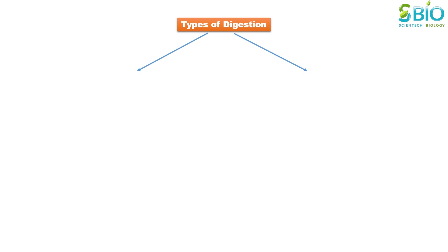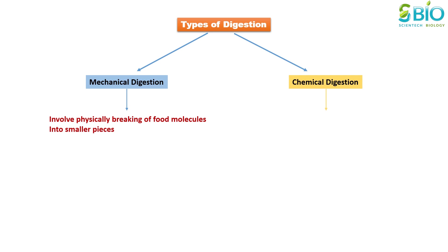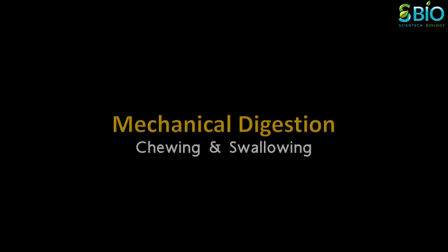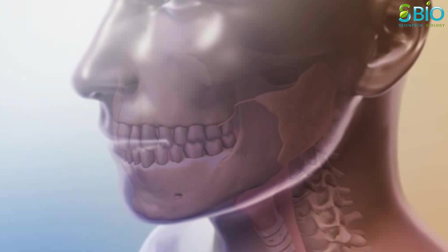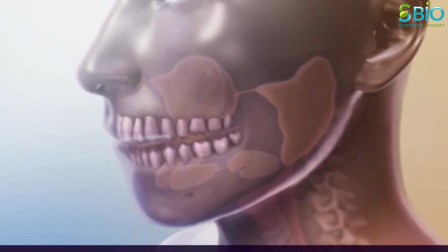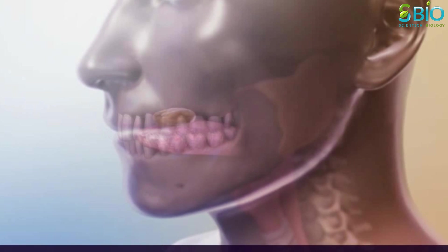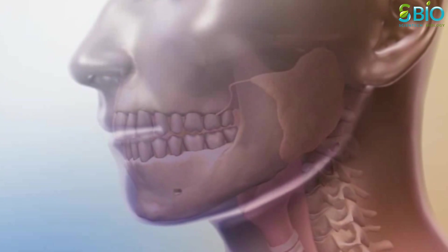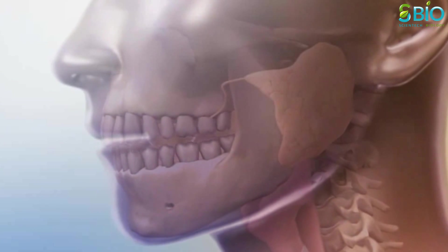There are two kinds of digestion: mechanical and chemical. Mechanical digestion involves physically breaking food into smaller pieces. Mechanical digestion begins in the mouth as food is chewed. Digestion begins in the oral cavity where the salivary glands, teeth, and tongue work to break down food into smaller masses that can be swallowed.